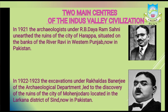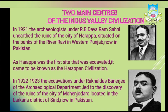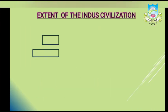But till date, more than 1,000 sites of this civilization have been discovered, situated in different parts of the Indian subcontinent, making it impossible to continue naming it the Indus Valley civilization. Since Harappa was the first site excavated, it came to be known as the Harappan civilization. Now let us focus on the extension of this Harappan civilization.